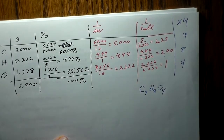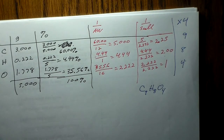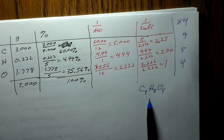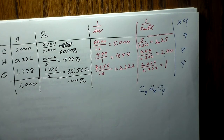If you look up aspirin or acetylsalicylic acid, you'll find that C₉H₈O₄ is also the actual molecular formula as well. So that's where we'll stop.